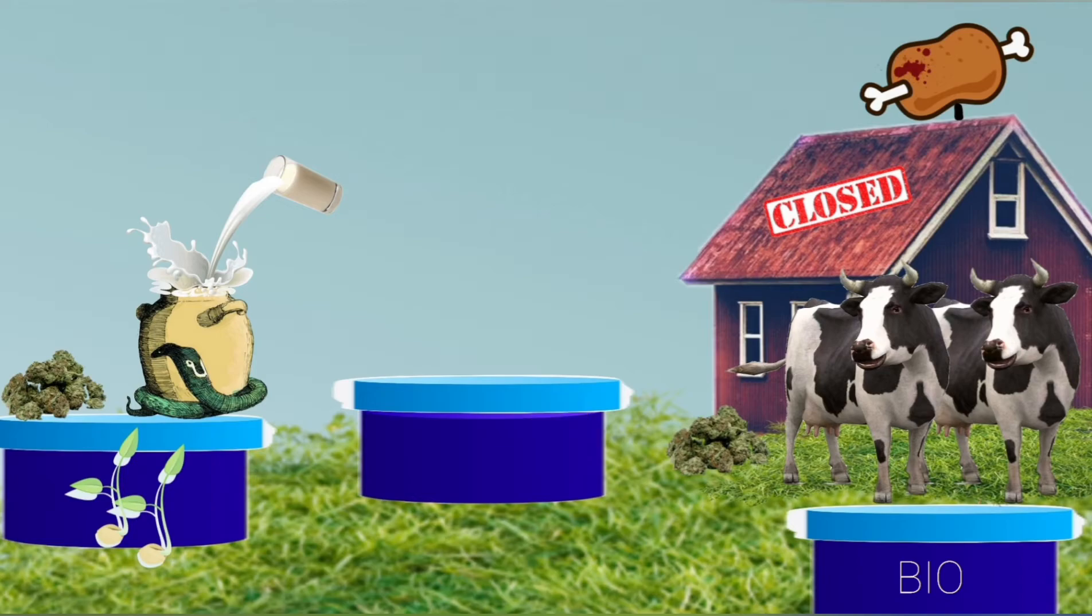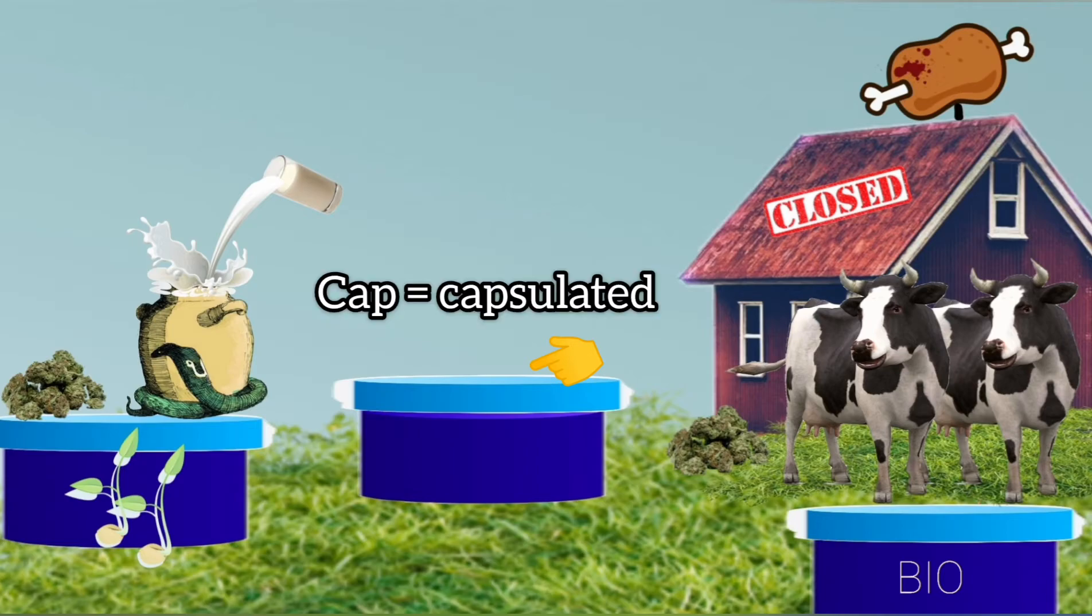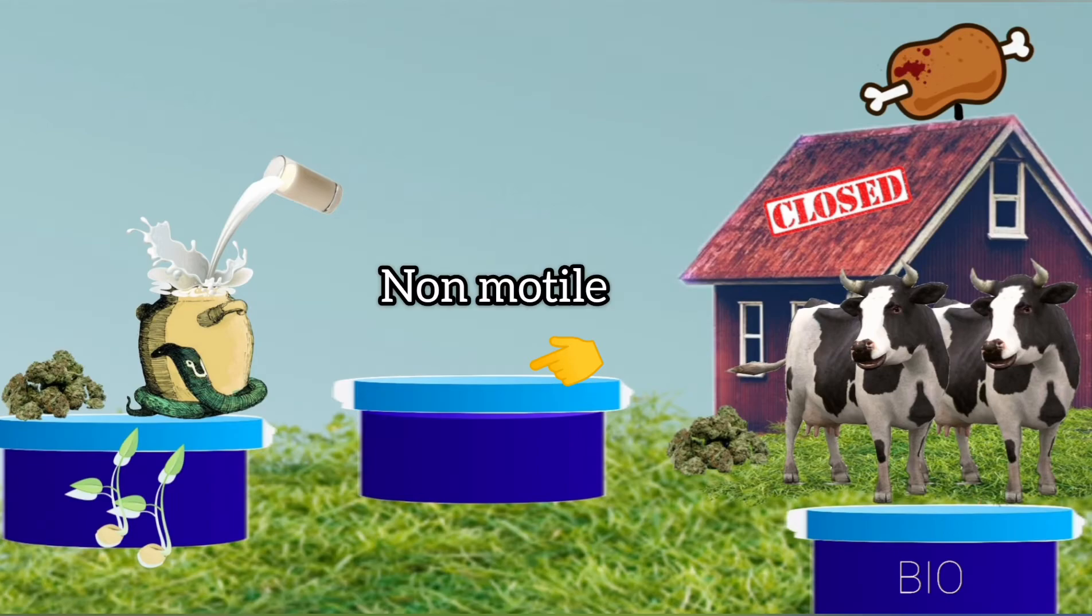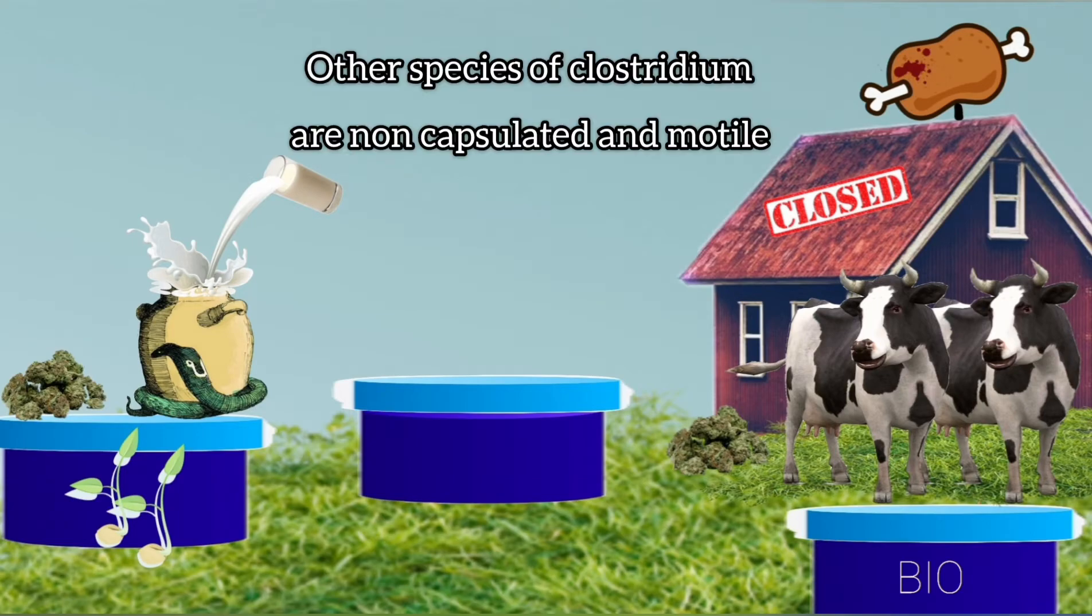You can also see that these wells have a cap or lid-like thing, so remember that Clostridium welchii is capsulated. Also, wells are fixed to a certain place, so these are also non-motile. This capsulated and non-motile is a very important morphological feature because it is an exception in the genus of Clostridium. Most other species are motile and non-capsulated.